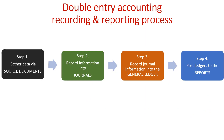If we're using double entry, then we'll add an extra step. We'll process our information in a general journal, and then from that we'll post it to our general ledger. We'll have a different ledger for all our individual accounts before we total that up and produce our outputs — our reports.